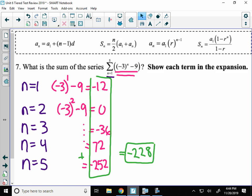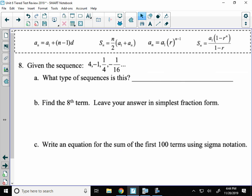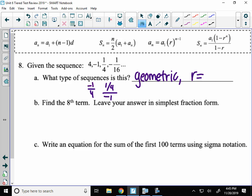All right. Number 8. Given the sequence. First determine what type of sequence it is. Well, the signs are alternating again, so that looks like it's going to be geometric. And I'm going to just say why. I'm going to say that the r value here, if I take negative 1 divided by 4, would be negative 1 fourth. And same thing over here. If I took 1 fourth divided by negative 1, that's also negative 1 fourth. So that's our r value.